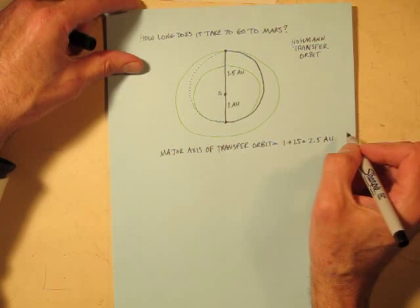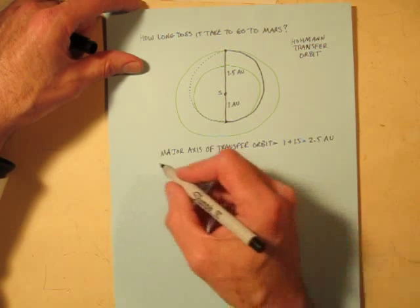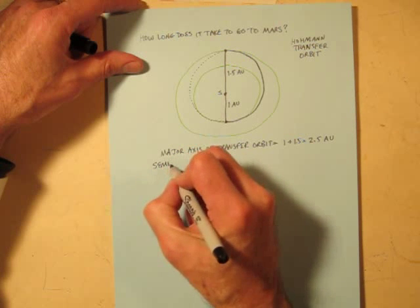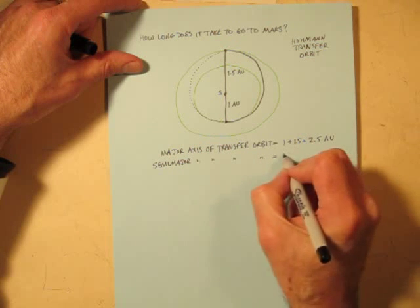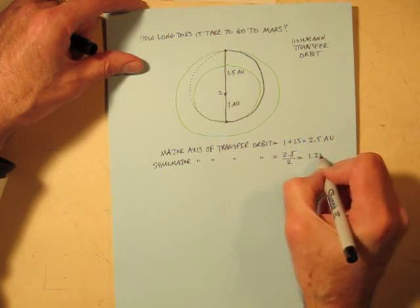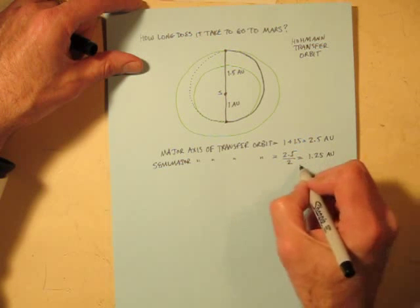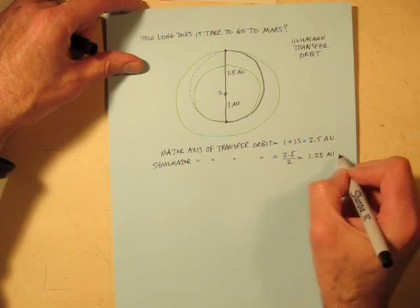Now for Kepler's third law, we want the semi-major axis. That's half of the major axis. So we just divide 2.5 in half and we get 1.25 AU. And that's A in our Kepler's law formula.